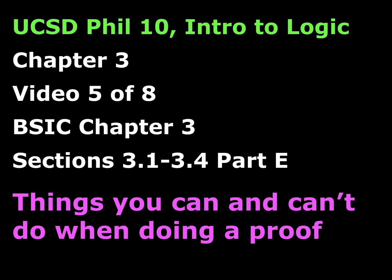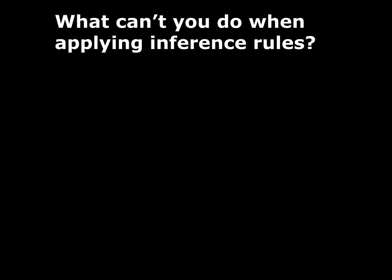Hello and welcome to the fifth video for Chapter 3, Basic Sentential Logic, Informal Fallacies, and Cognitive Biases. What I'm going to do in this video is talk about some common errors that people make when they're doing basic proofs. There are two kinds of things we'll be talking about: things people do that they shouldn't do, and some things people can do that they didn't realize they could do. We're first going to start off with things that you shouldn't do.